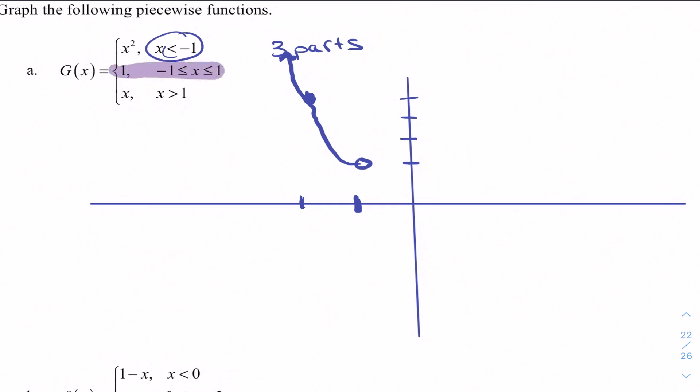The second part says between negative 1 and positive 1 horizontally, my y value is 1. So I will, different color, for part 2, from negative 1 to positive 1. And I fill both of those circles in because I have less than or equal to, less than or equal to.